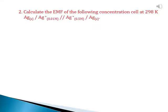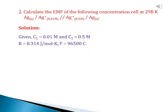Next problem: calculate the EMF of the following concentration cell at 298 kelvin — Ag(s) | Ag⁺ (0.01 M) || Ag⁺ (0.5 M) | Ag(s). Given: anodic concentration C1 = 0.01 moles and cathodic concentration C2 = 0.5 moles.